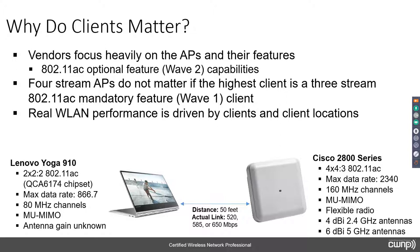Let me be very direct: four-stream APs do not matter if the highest client is a three-stream 802.11ac mandatory-feature wave 1 client. If your AP can do multi-user MIMO, four streams, and 160 MHz channels, that's nice — but if the maximum capable client is three-stream and doesn't support multi-user MIMO, you can't take advantage of any of those AP features. Read the specs closely — the Cisco 2800 series AP is a four-by-four but three-stream device.